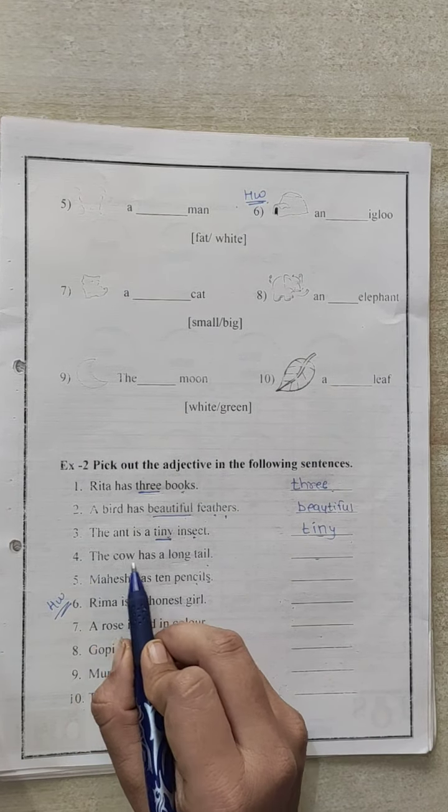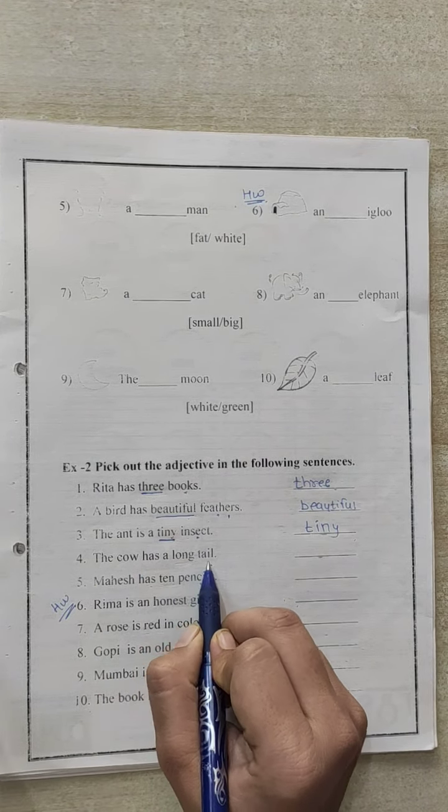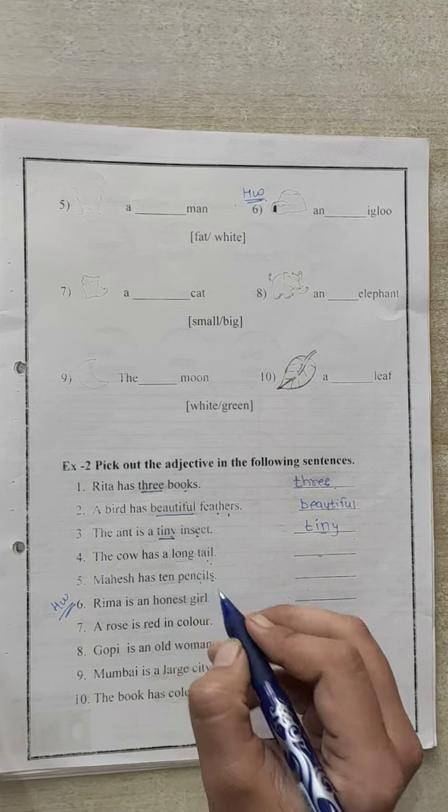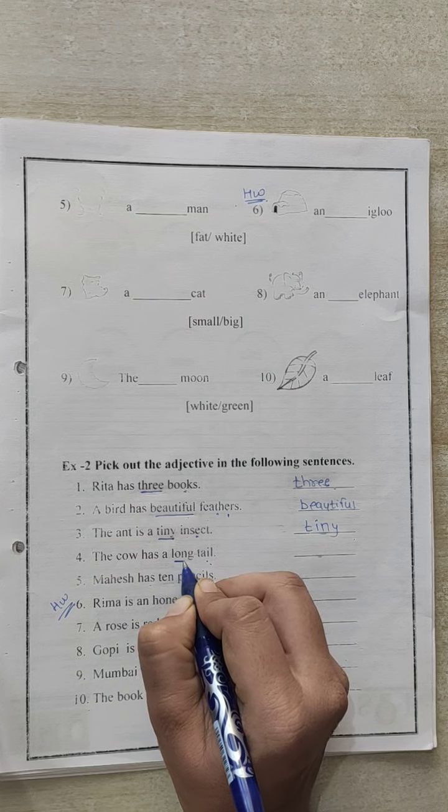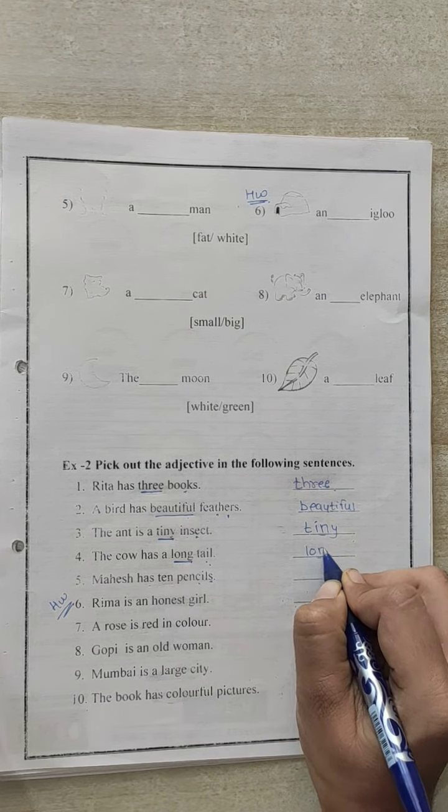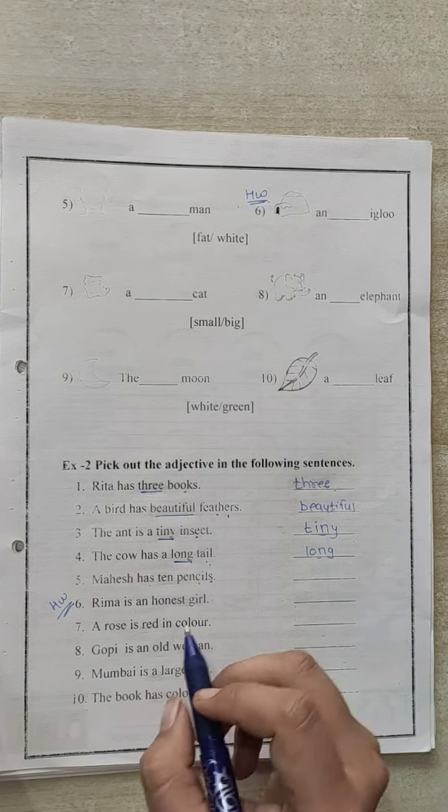Number 4. The cow has a long tail. Now which type of tail is mentioned in the sentence? The tail is long. So long describes the tail. So it is an adjective. So write it here in the blank and underline it.